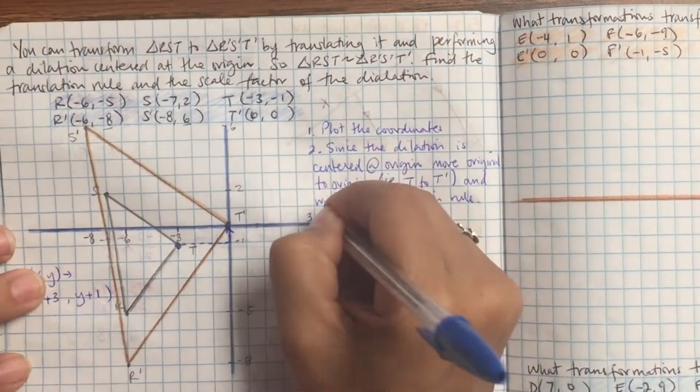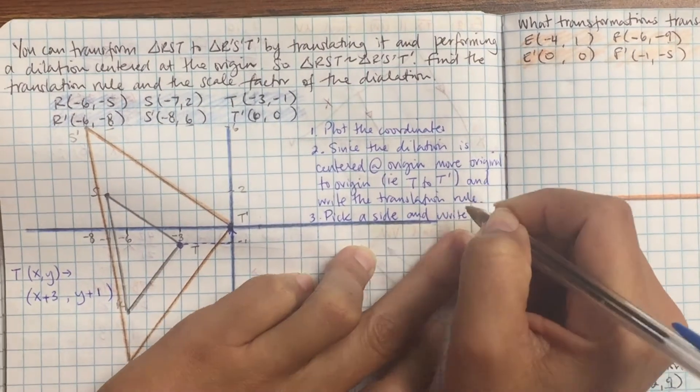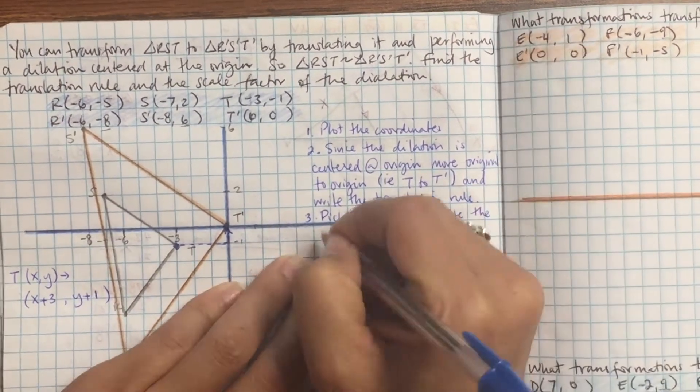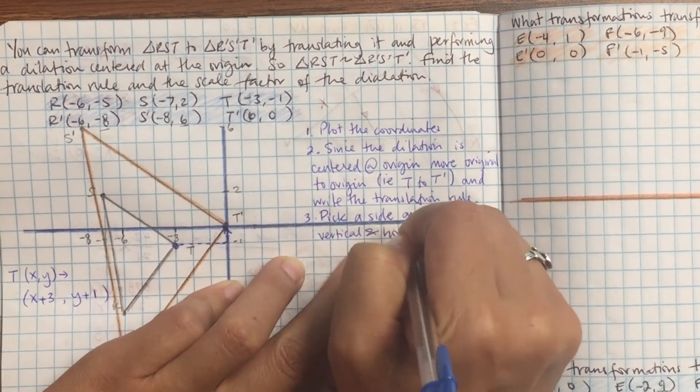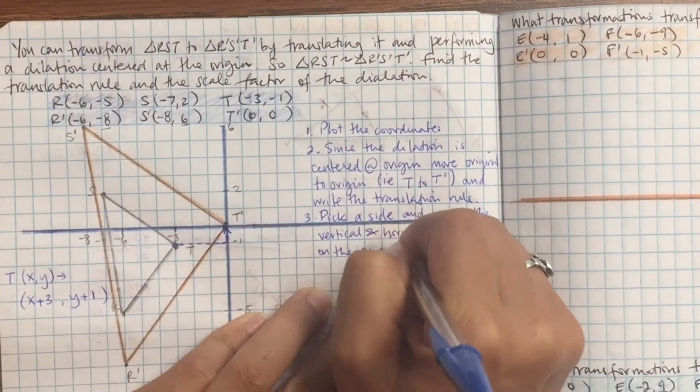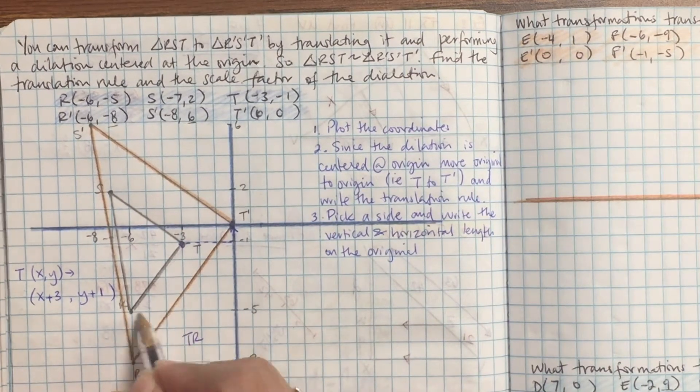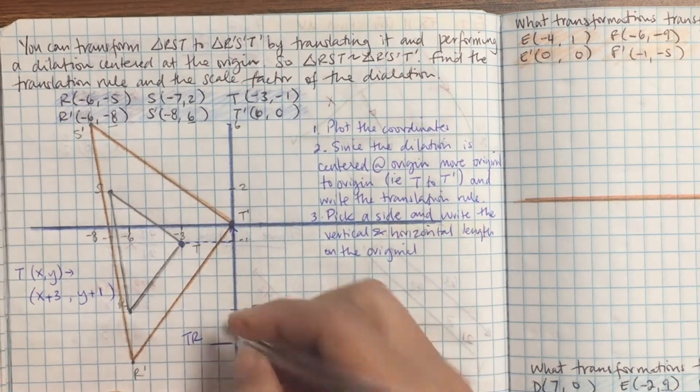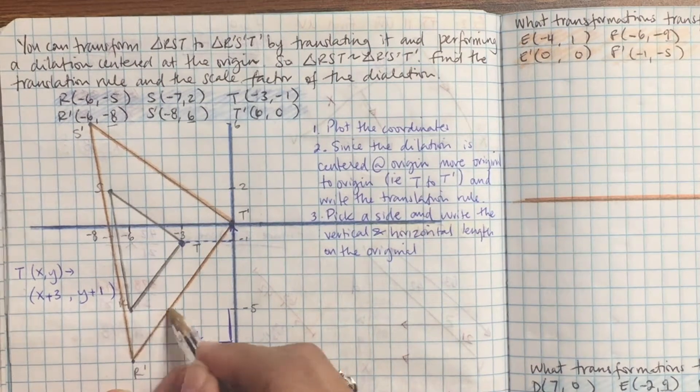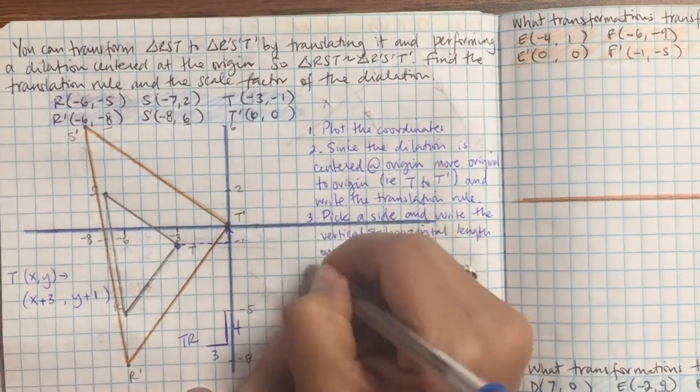Alright, step 3, to find the dilation, so now the triangle is the same place, pick a side and write the vertical and horizontal length on the original. This is a listening check, put a box around the number 3. Alright, so this is what I mean. So take TR for example, horizontal is 3 and then vertically it's 4.